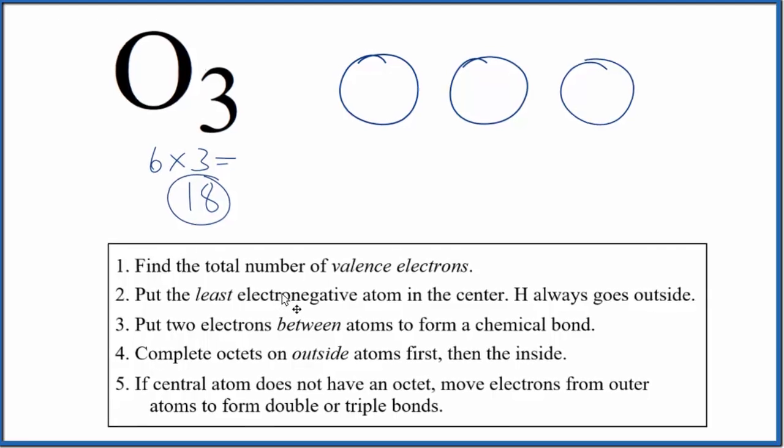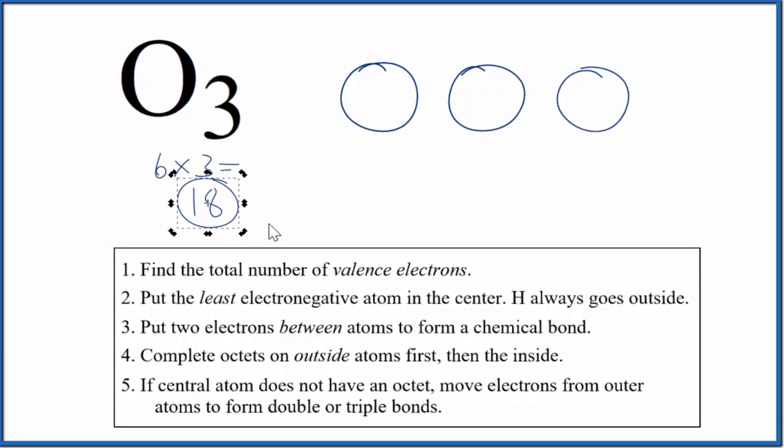We have a total of 18 valence electrons. We'll put two electrons between the atoms to form chemical bonds—two here and two here. That uses four valence electrons.